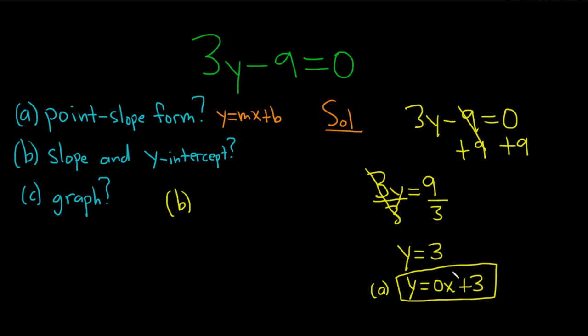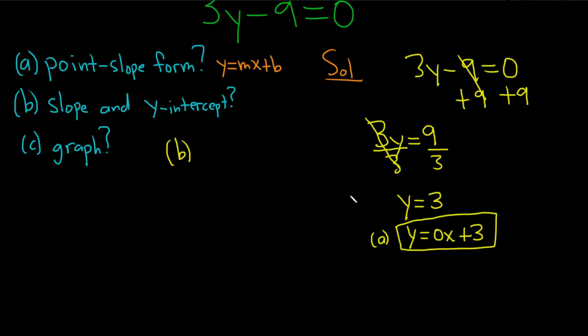For part B, we can just use matching. Remember, this is now in the form y equals mx plus b. So you see the slope here is 0, so m is equal to 0, and that's the slope. The slope is equal to 0.